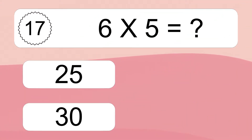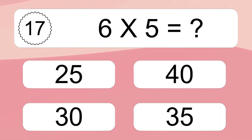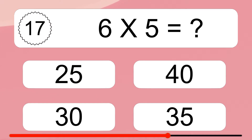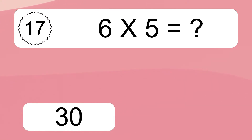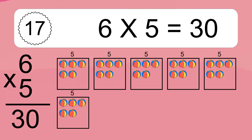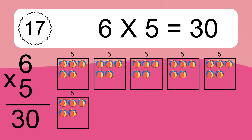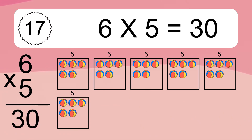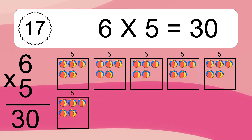6 times 5 equals what? 6 times 5 equals 30. We have 6 boxes and each box has 5 colorful balls inside. If you count all the balls in all the boxes together, you will have 6 times 5 balls. This equals 30 balls.